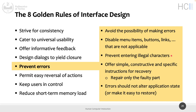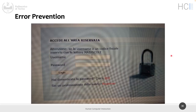When errors happen — because they will — the instructions for recovery should be simple, constructive, and specific. Identify which is the problem and how to solve it. Most importantly, repair only the faulty part: if you have a form with ten fields and one has an error, don't empty the form — just highlight the single thing to fix and keep everything else. An error should not, when possible, alter the application state, or at least make it easy to restore.